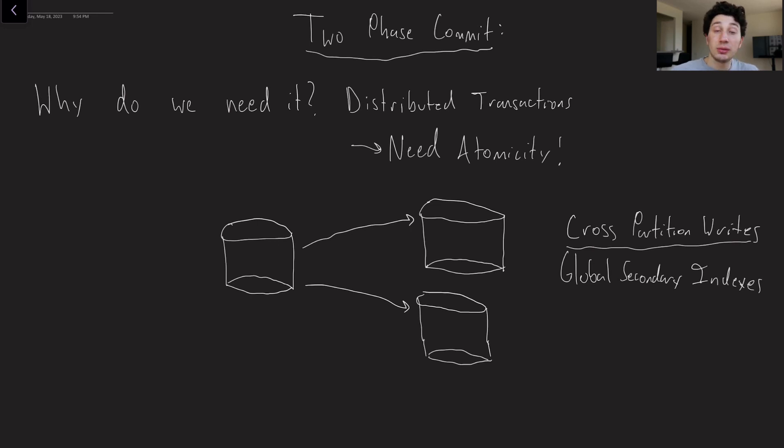So why do we need distributed transactions? We need atomicity here, because when we want to write to multiple places, let's say this is node one and this is node two, and those guys represent different partitions. If this guy goes through but this write fails, we're in trouble, our database is now going to be in an inconsistent state. And we are going to probably have some incorrect reads, which generally speaking, we don't necessarily want. Eventual consistency is okay because we know it will resolve itself. But incorrect reads will not, those are going to be persisted forever.